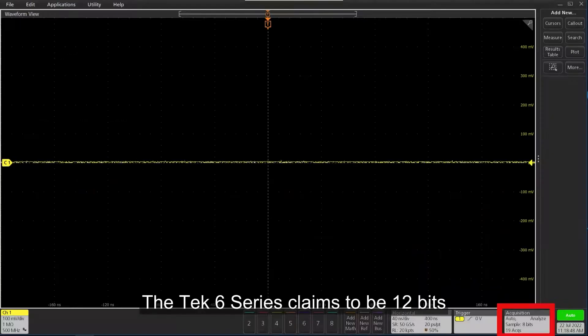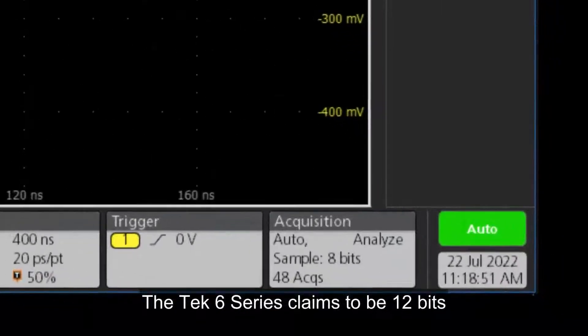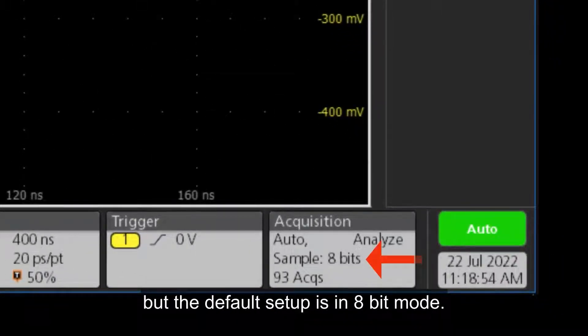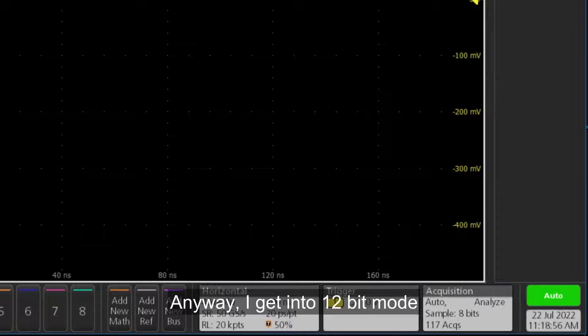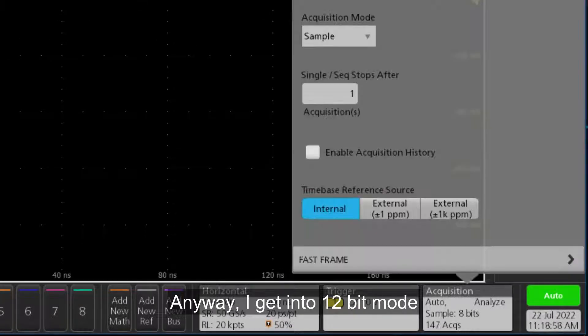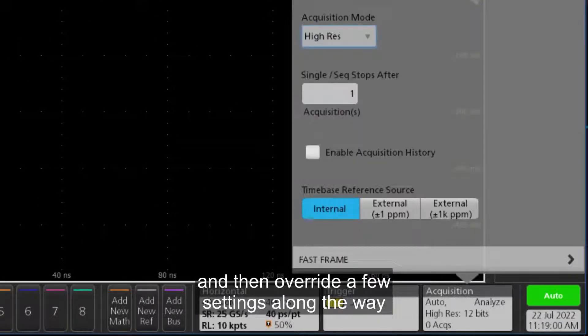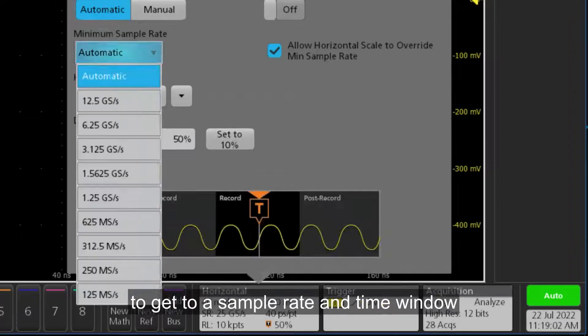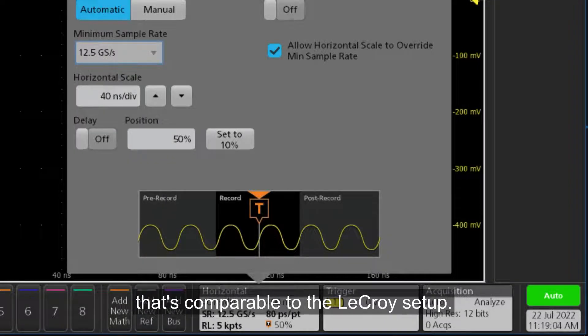The Tektronix 6 Series claims to be 12-bits, but the default setup is in 8-bit mode. I wonder why. Anyway, I get into 12-bit mode and then override a few settings along the way to get to a sample rate and time window that's comparable to the LeCroix setup.